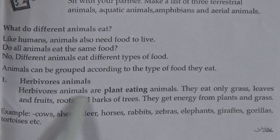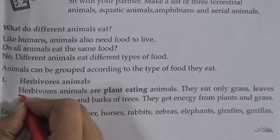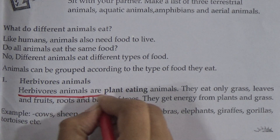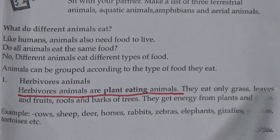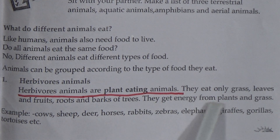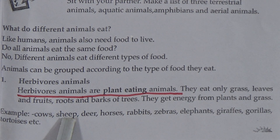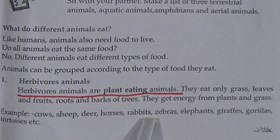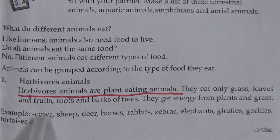Today we will discuss the first group of animals — herbivorous animals. Herbivorous animals are plant-eating animals. They eat only grass, leaves, fruits, roots, and barks of trees. They get energy from plants and grass. Examples of herbivorous animals: cows, sheep, deer, horses, rabbits, elephants, giraffes, gorillas, tortoise, etc. — all are herbivorous animals.